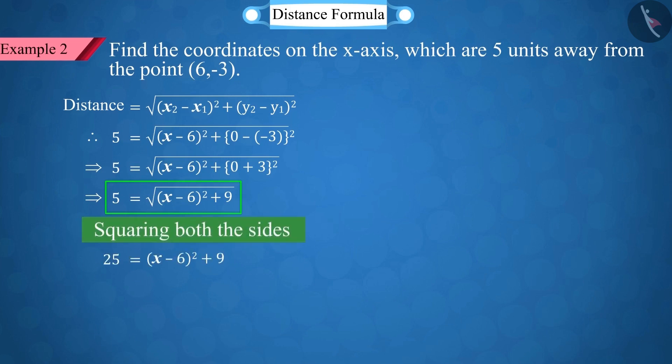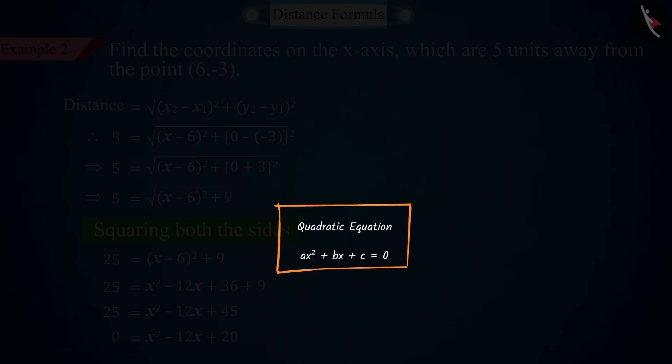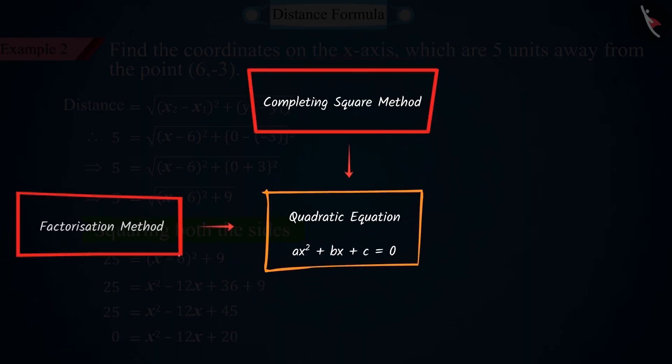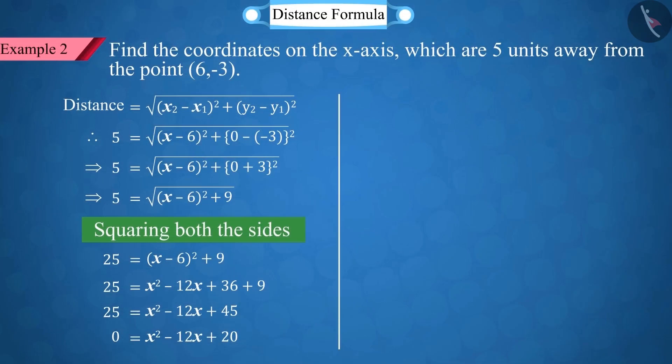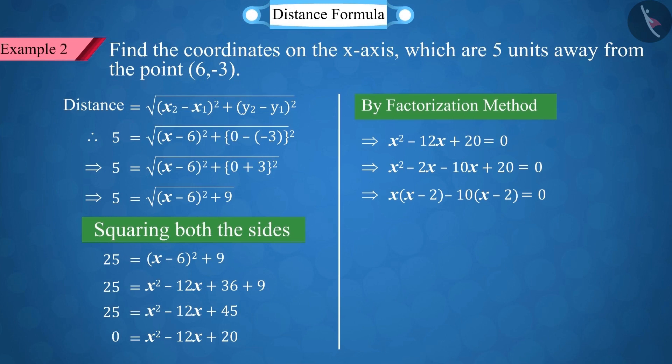Squaring both sides of this equation, we get a quadratic equation. You must remember that we have already studied many methods of solving quadratic equations. Here, we solve the quadratic equation by the method of splitting the middle term, from which we get two values of x, that is, x is equal to 2 and 10.